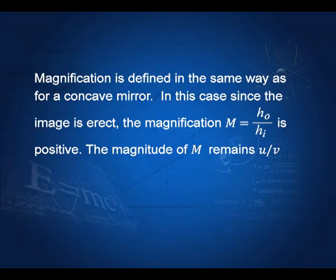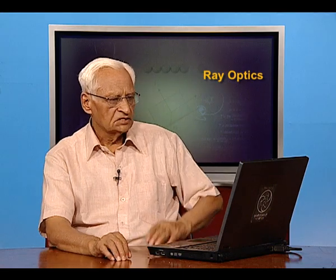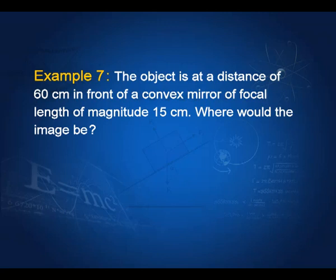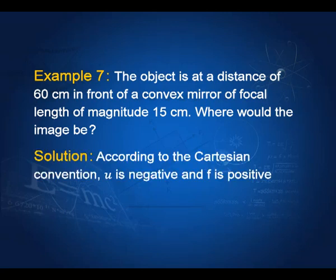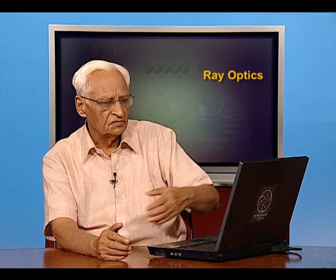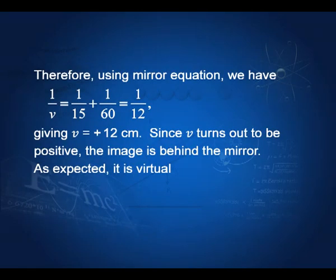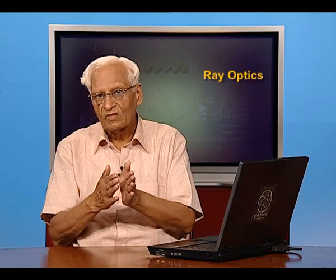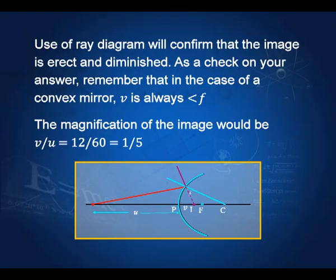Magnification retains the same definition. In this case, magnification is positive because both H_o and H_i are in the same direction. For an example: suppose the object is 60 centimeters in front of a convex mirror of focal length 15 centimeters. U is negative (in front of mirror), f is positive for a convex mirror. Substituting into the mirror equation gives v = +12 centimeters — the image is on the opposite side from the object, confirming a virtual image. The magnification v/u = 12/60 = 1/5.